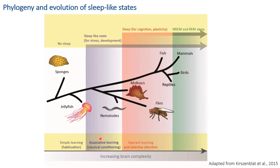From animals with associative learning, you can move to animals with operant conditioning, attention, plasticity, cognition, and so on. At the level of mammals, birds, and even reptiles, we can distinguish between two peculiar phases of sleep: non-rapid eye movement and rapid eye movement sleep, or more simply non-REM and REM sleep.